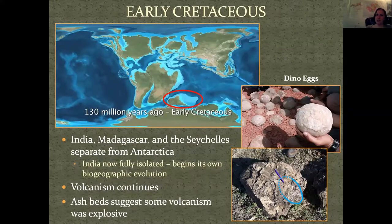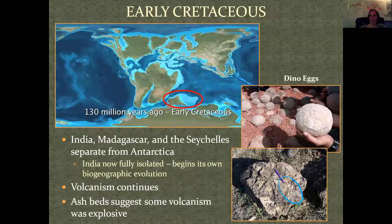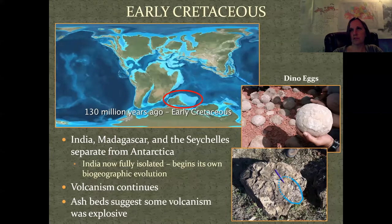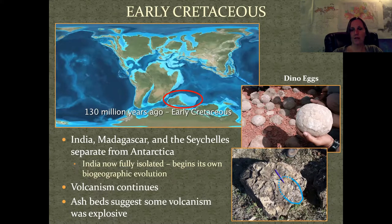Now we're moving into the Early Cretaceous and now India is fully isolated from the major landforms, starting its own biogeographic evolution. This is when India really starts to have its special fauna and flora. The Early Cretaceous is kind of void of fossils for the most part, but you do have some dinosaur eggs — and India is really famous for its dinosaur eggs. The Rajmahal volcanism is still going on and there's actually evidence of ash, suggesting this time was a little more explosive than when the Deccan erupted.